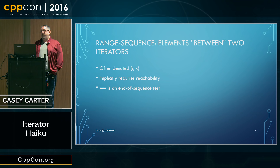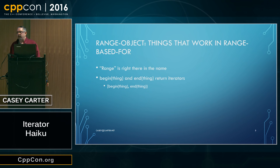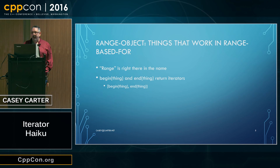Our other notion of ranges in the standard is a range object — things you can plug into range-based for. They must be ranges because the word range is right there in the name. The interesting fact about range objects is that we can apply begin and end on them and get iterators back, getting a range of the first kind — a range sequence. Range-based for converts range objects into range sequences so our two kinds of ranges end up being one kind of range.